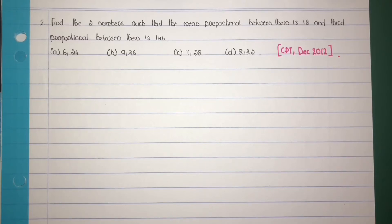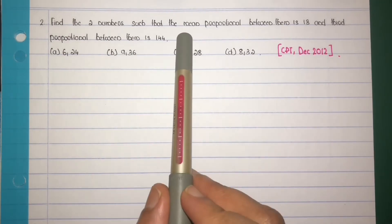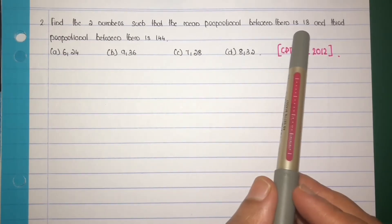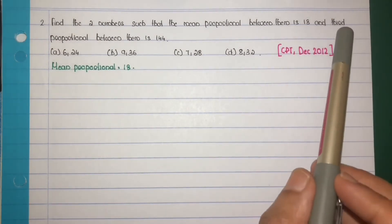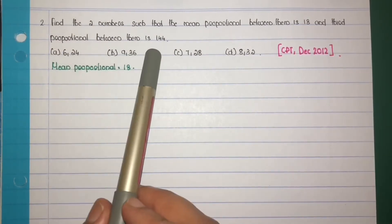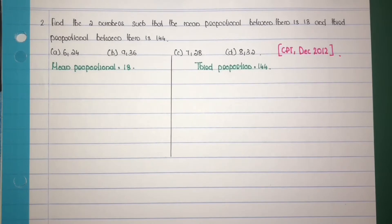Find the two numbers such that the mean proportional between them is 18 and the third proportional between them is 144. Two conditions are given: first condition is the mean proportional between them is 18, and second condition the third proportional between them is 144. Our aim is to find the option which satisfies both those conditions.